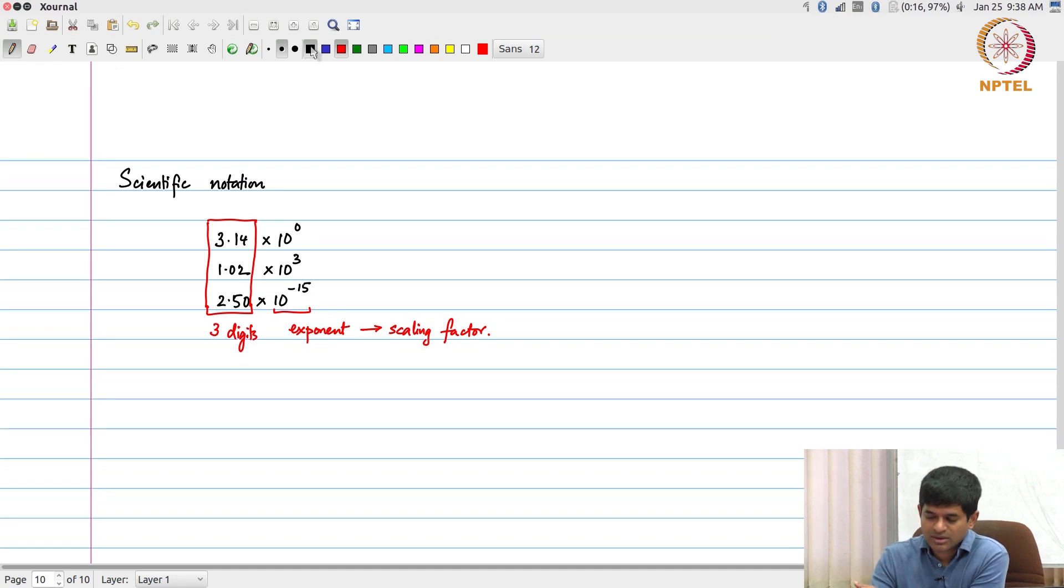How do we make use of that? If you think about what I have done over here, I have basically said look, I will use some 3 digits in order to represent the value, the actual precision of the number, and I will use some additional digits, 0, 3, minus 15, etc., in order to represent what my exponent is supposed to be.